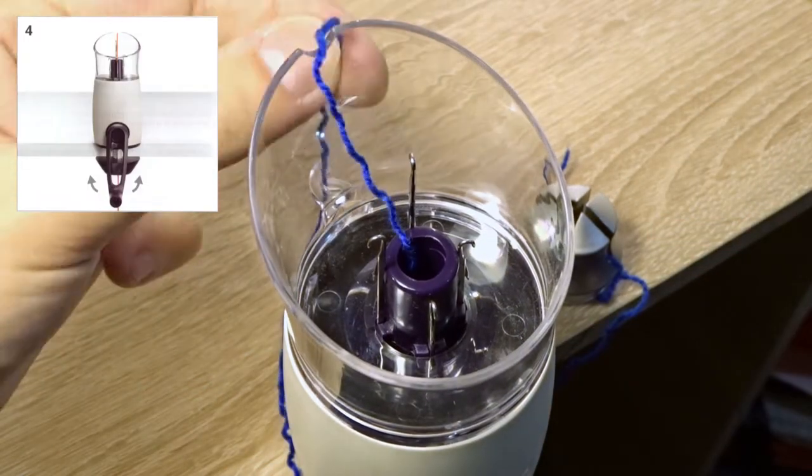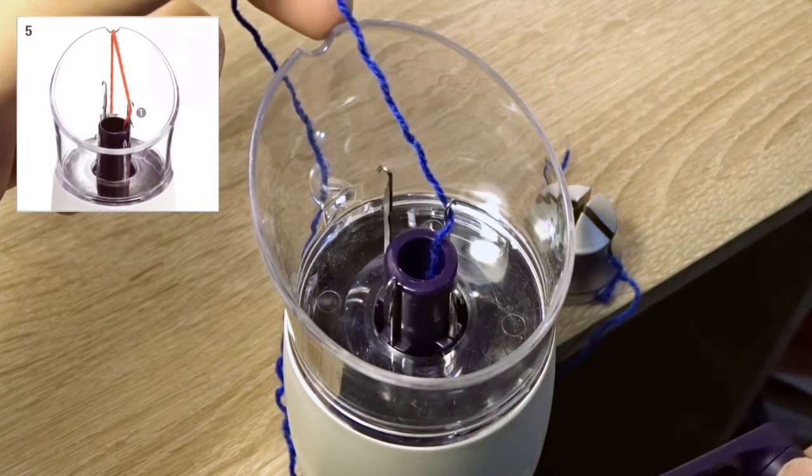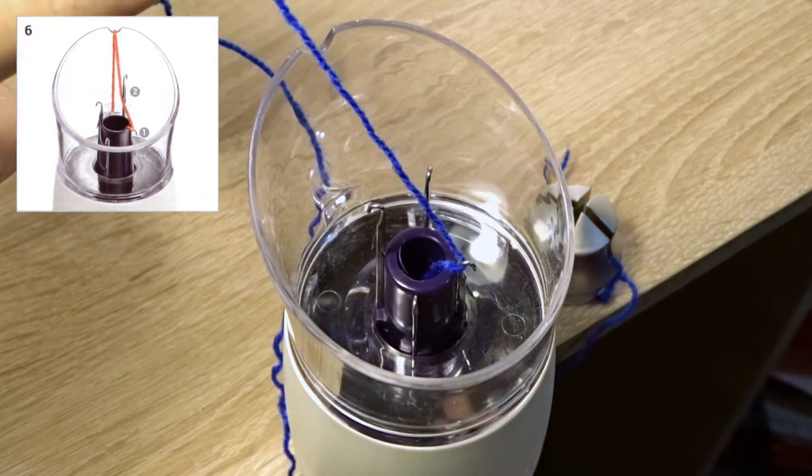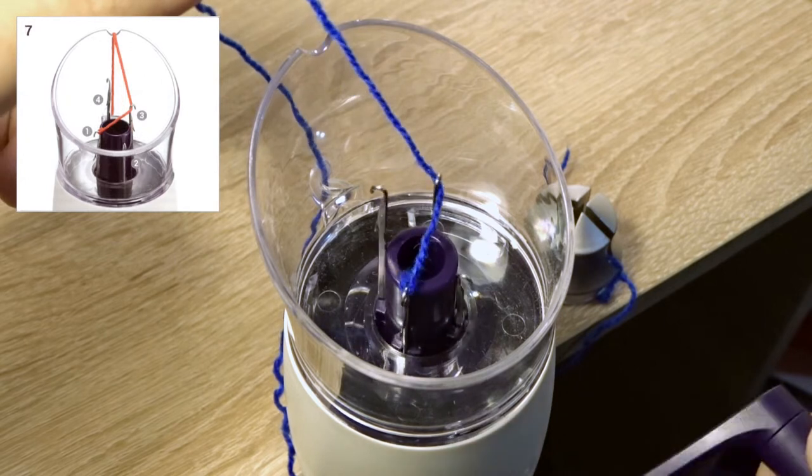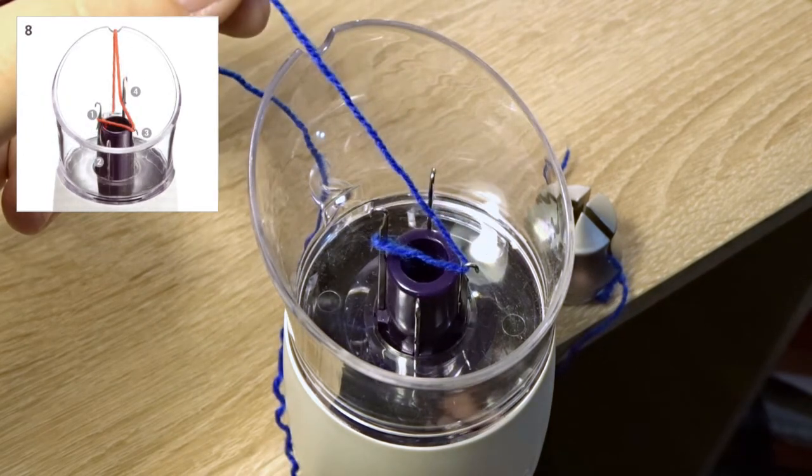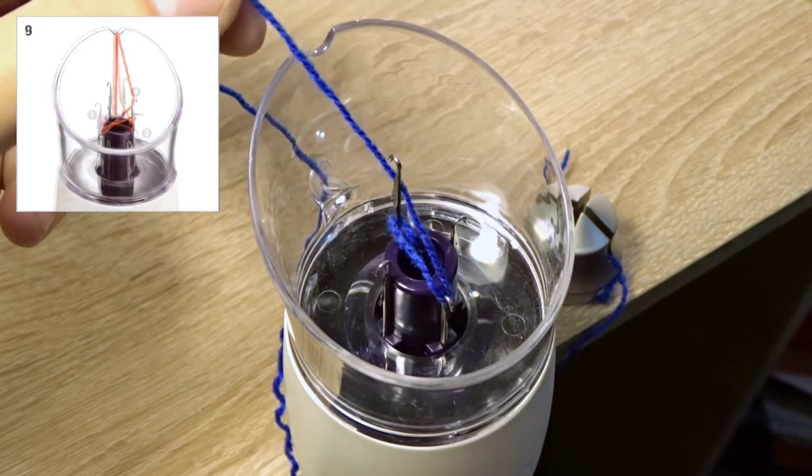Take the yarn with your left hand and start to rotate the handle. Attach the yarn to the first hook then pass it behind the second one. Attach it to the third hook and pass it behind the fourth one. The cast on is ready.